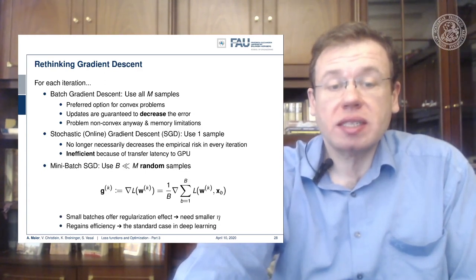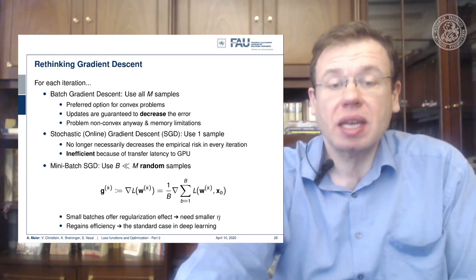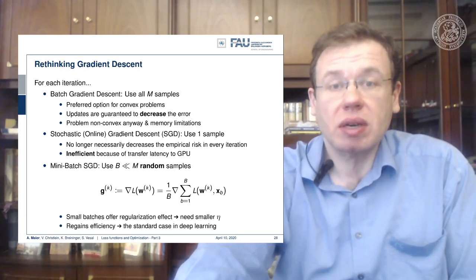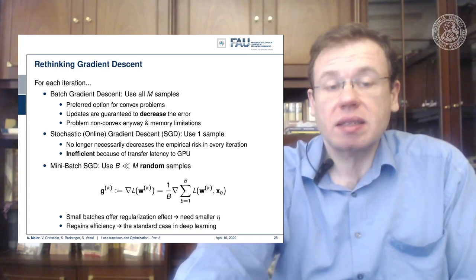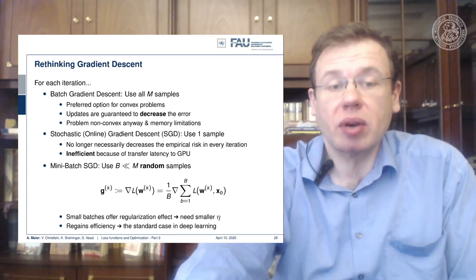Small batches are useful because they offer a kind of regularization effect. This typically results in smaller ITER — if you use mini-batch stochastic gradient descent, typically smaller values of ITER are sufficient. It also regains efficiency and this is the standard case in deep learning; a lot of people work with mini-batch stochastic gradient descent.